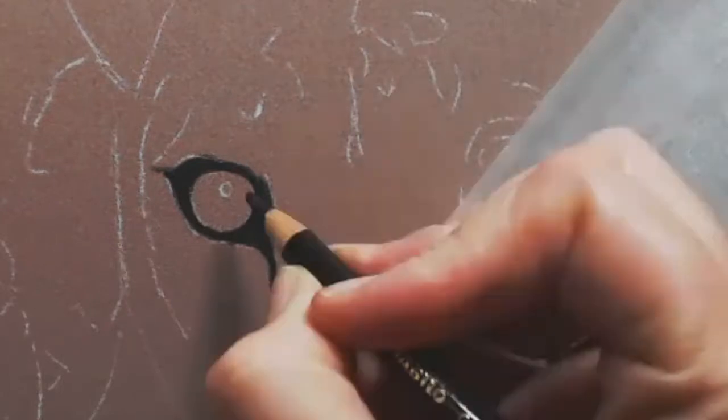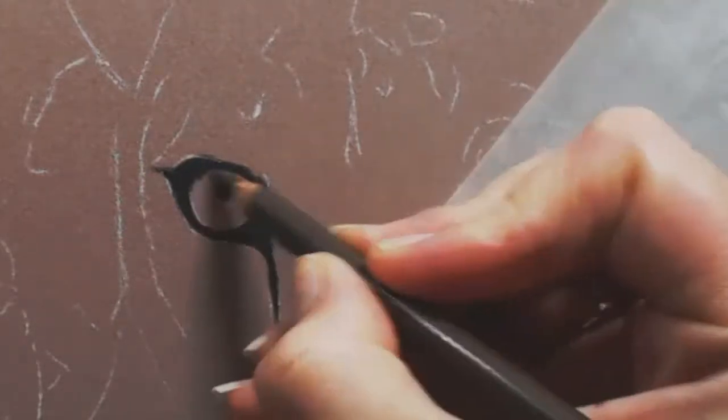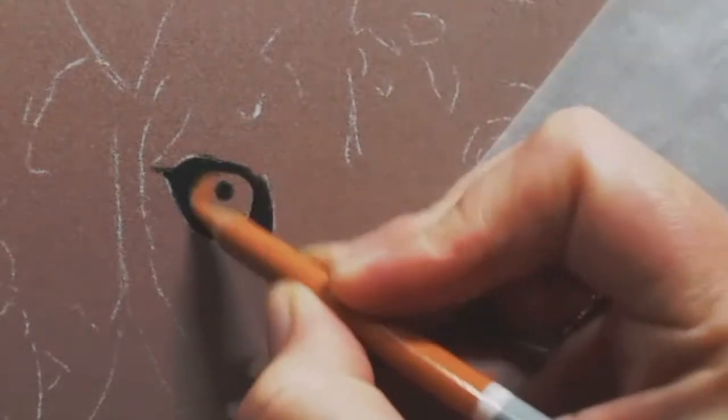I think I must be sharpening a pencil here. And then what I do after this is I then block in where the pupil is, just so that you make sure you focus on where that pupil is, because obviously that will make a difference as to where the animal is looking.